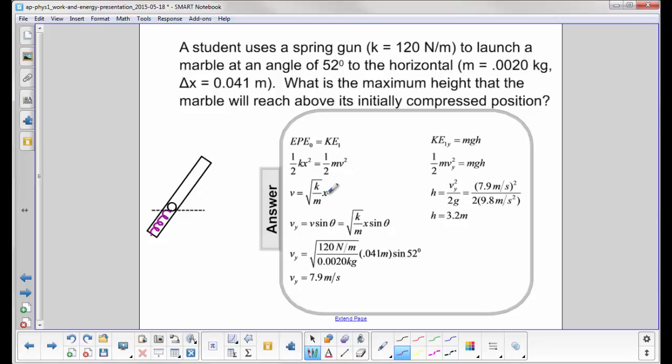Now we're only interested in the velocity in the y direction because we want to find the maximum height. We're not interested in the x component of the velocity. So that's where this sine theta comes in. Vy equals V sine theta. We have an expression, square root of k over m, x times sine theta. We substitute in the numbers, and we find that Vy is 7.9 meters per second.